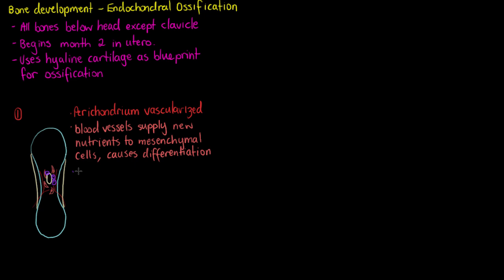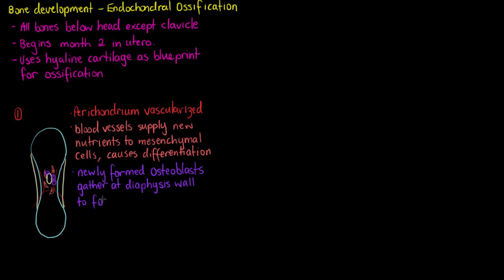Once they've become osteoblasts, they're going to start to gather along the diaphysis wall — the outer edge of those long bones. They're gathering at the diaphysis wall to form a bone collar. These osteoblasts gathering along that wall are going to start depositing osteoid and forming a bone collar.